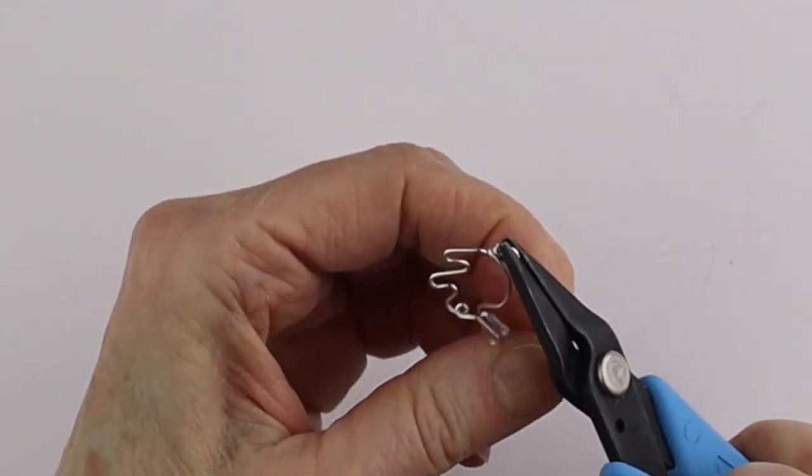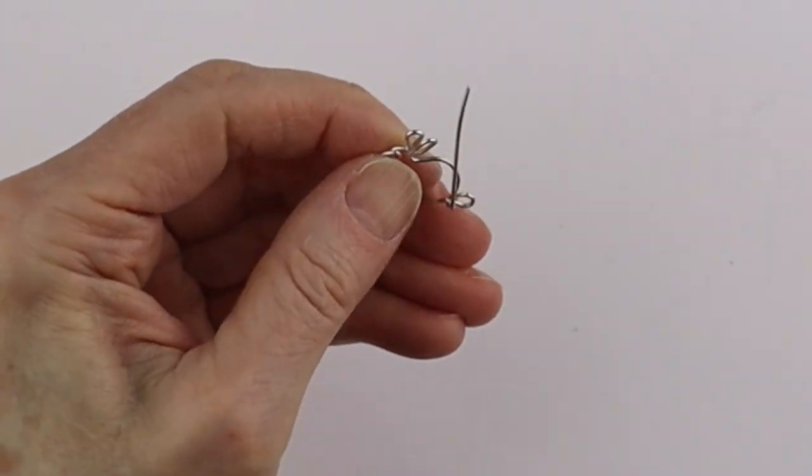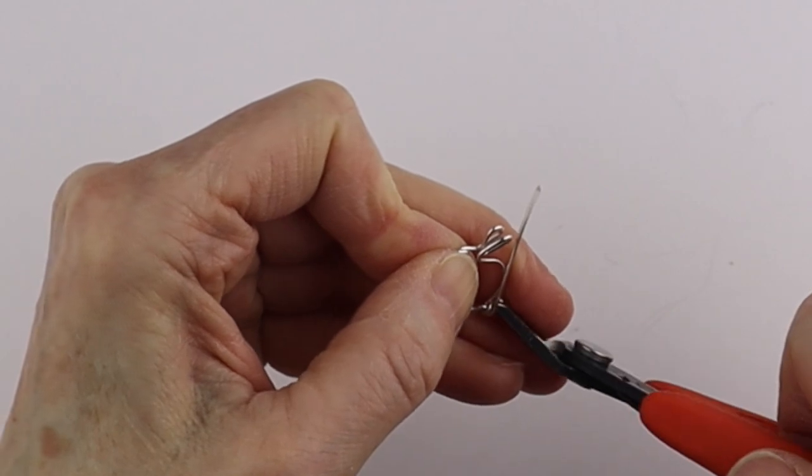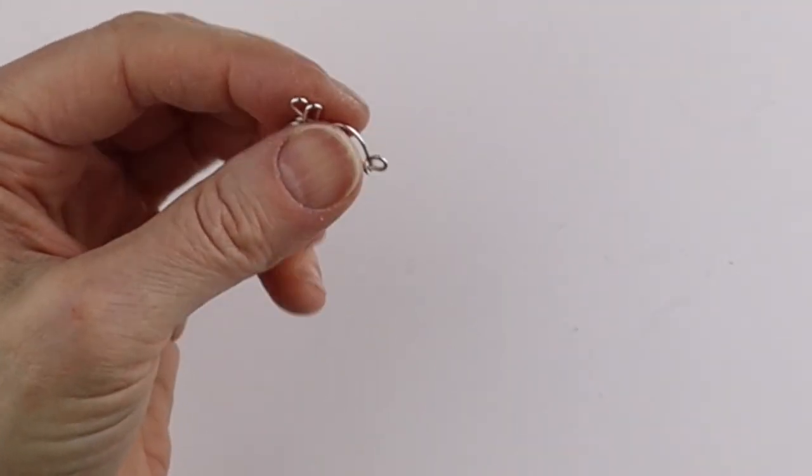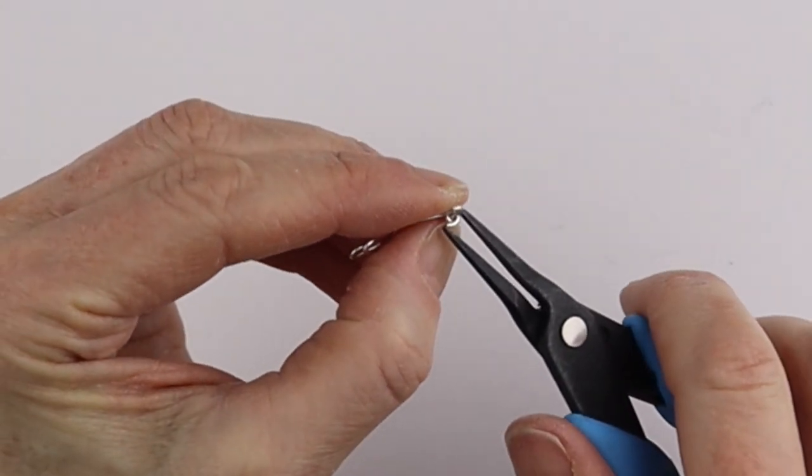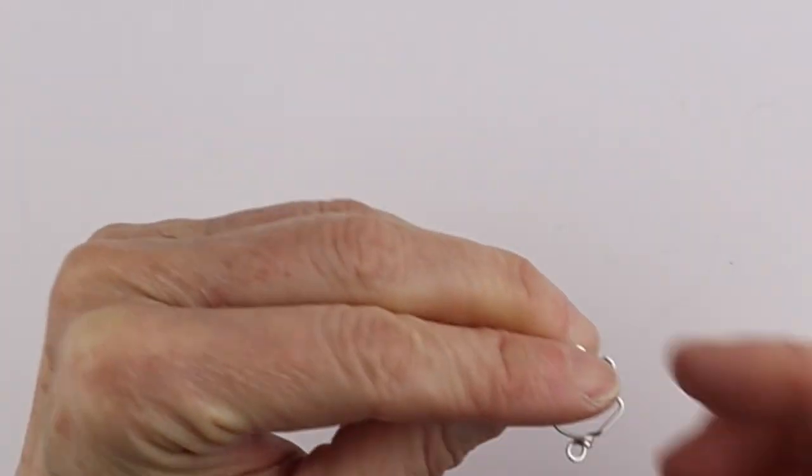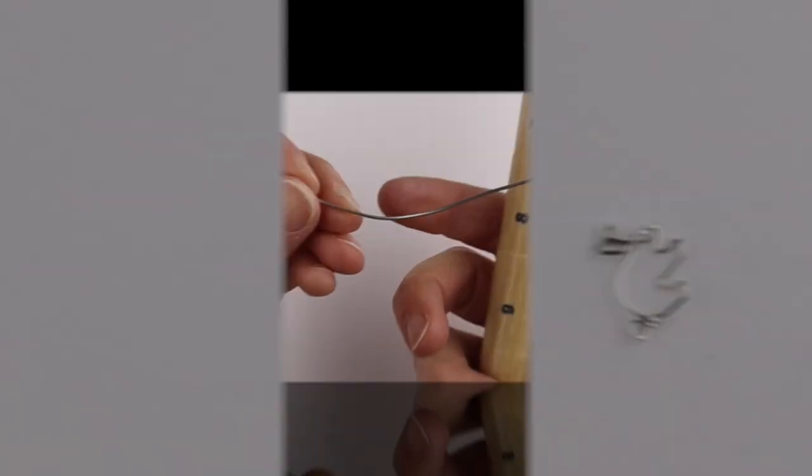Hold it with the flat pliers. Bend it around and then we are going to clip it so the end is gone and then we're just going to pinch it in with the flat pliers so there's no scratchy bits.